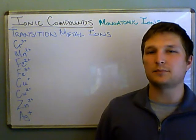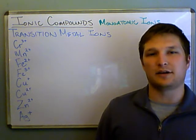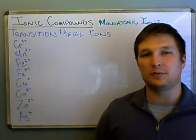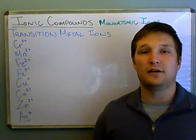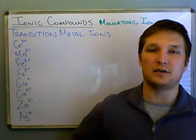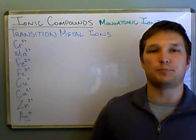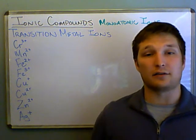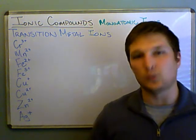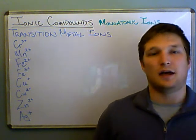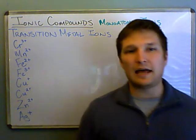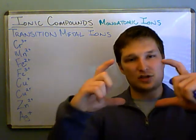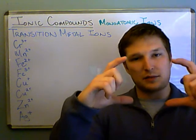Some of the atoms on the periodic table were predictable. Like sodium, if it's an ion, is almost always going to be sodium plus 1. And the chloride ion is almost always minus 1. Now, I was talking about the d-block, the transition metals in the middle.